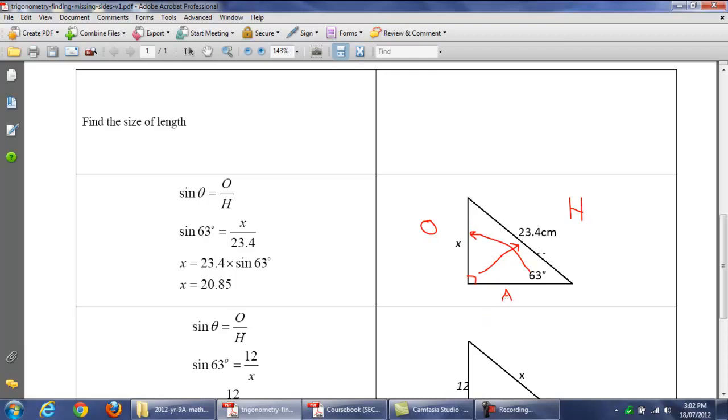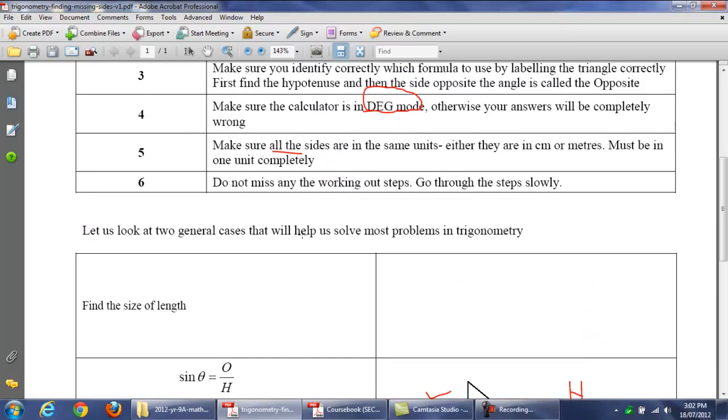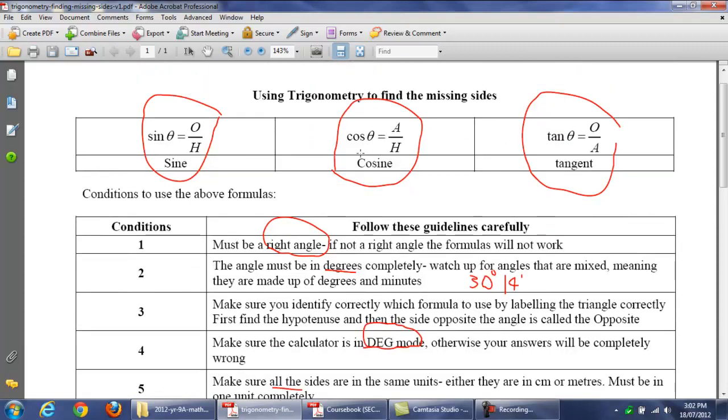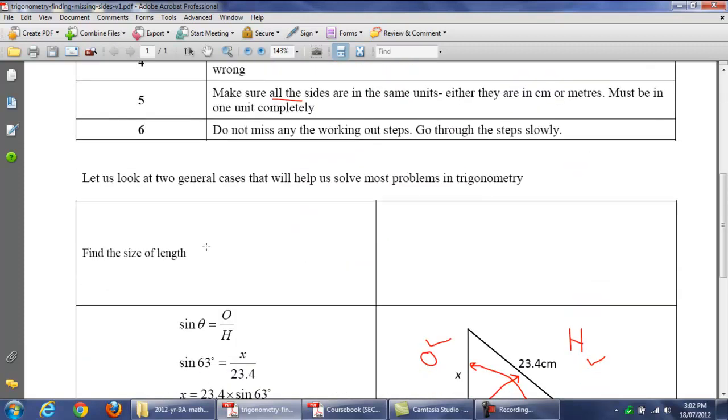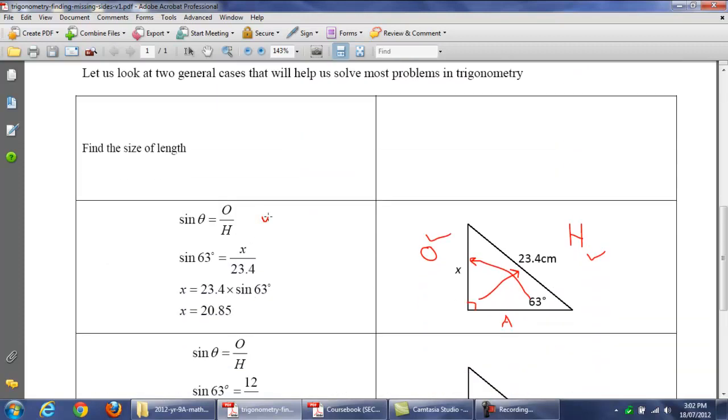So, now that we've labelled the triangle correctly, what do we do now? Well, let's look at what we've got. We've been given H and we have to find O. So, we look at the formulas here. And which formula has an O and an H in it? Well, the one that has it is this one here. So, there's the first step. You write it down.